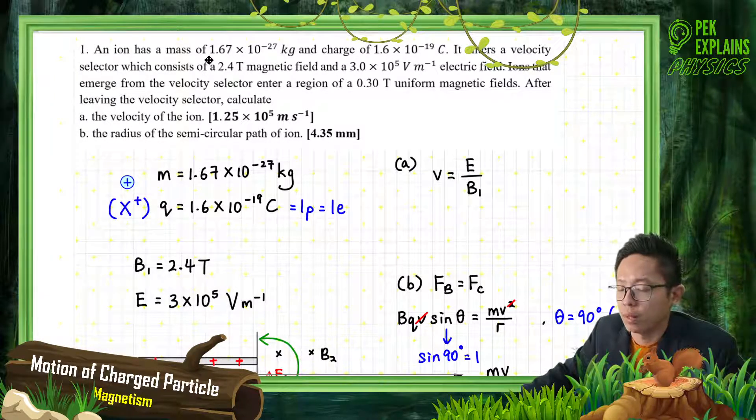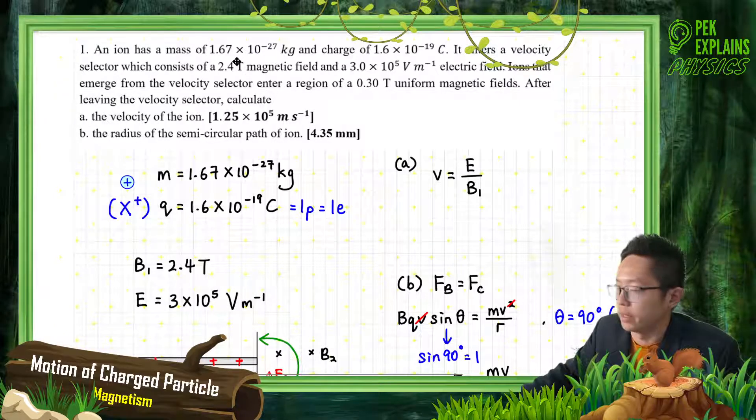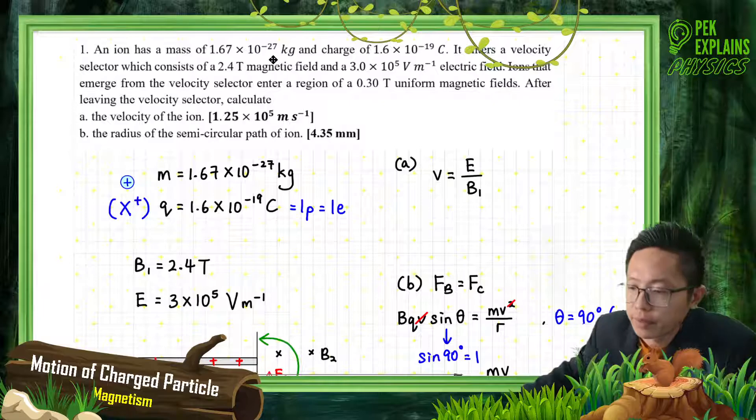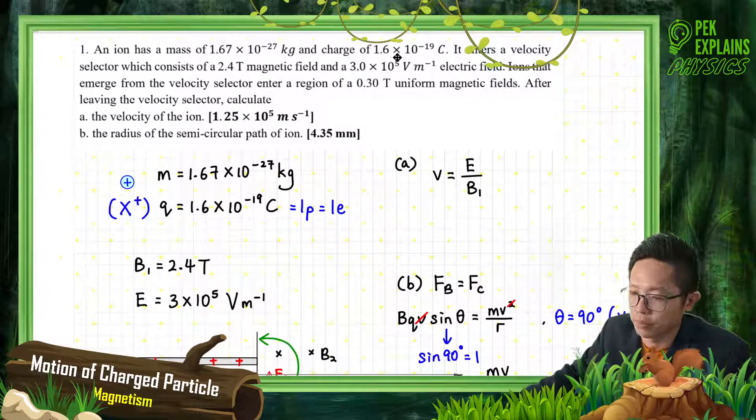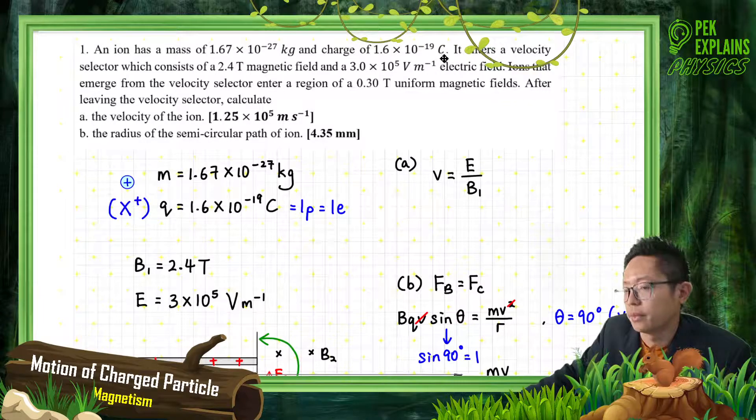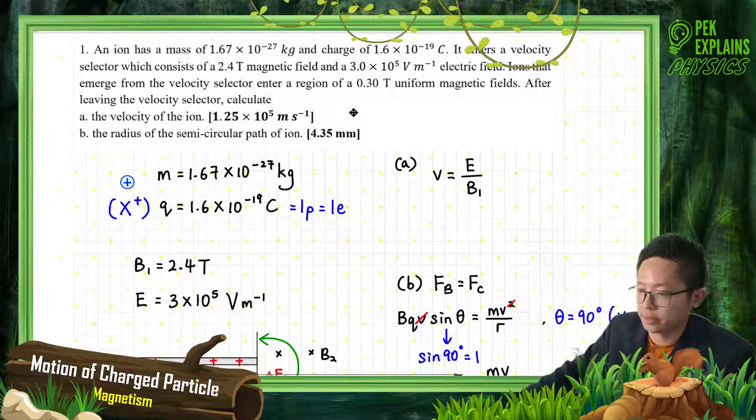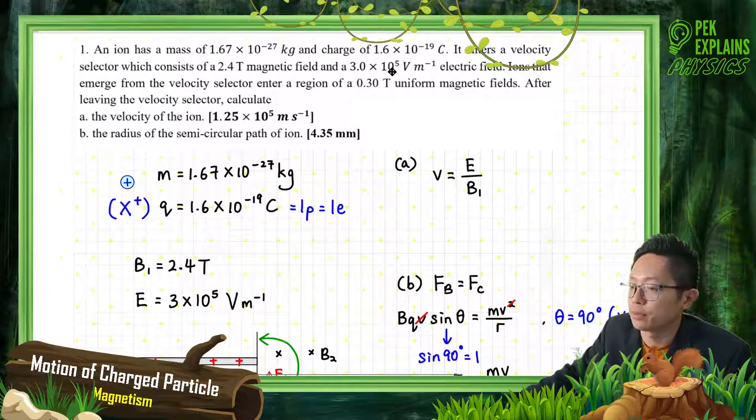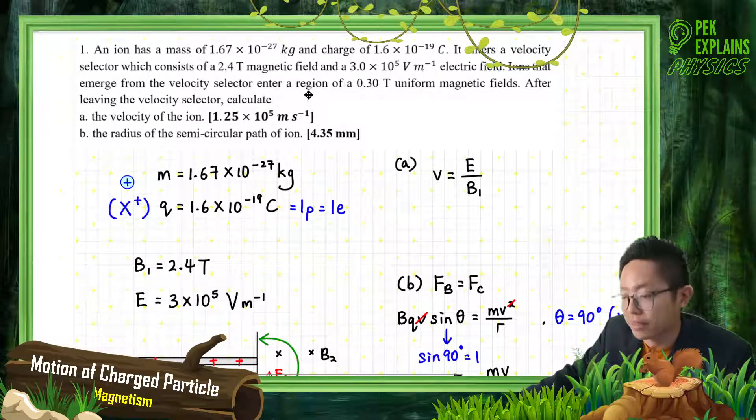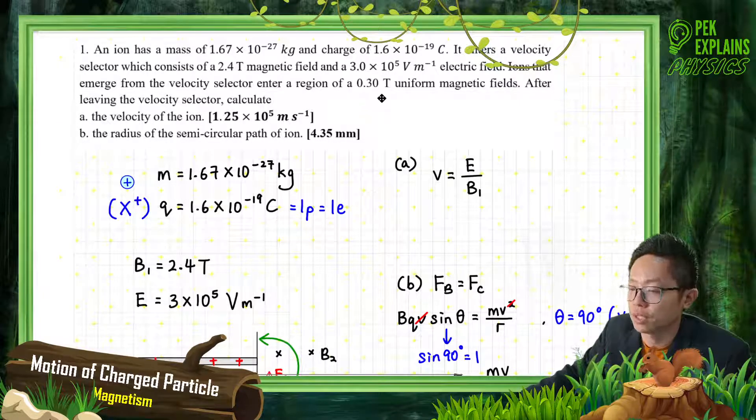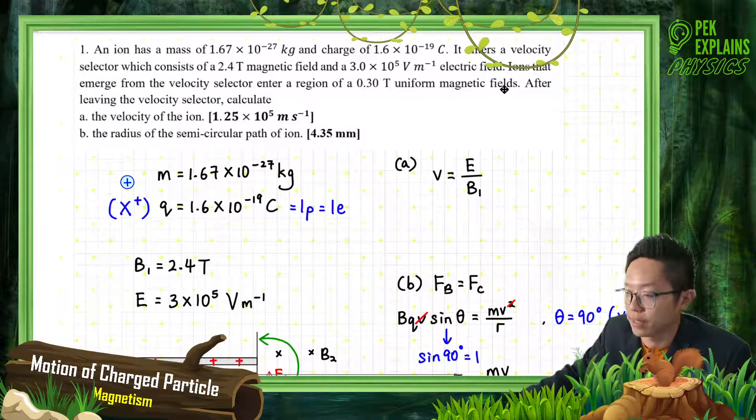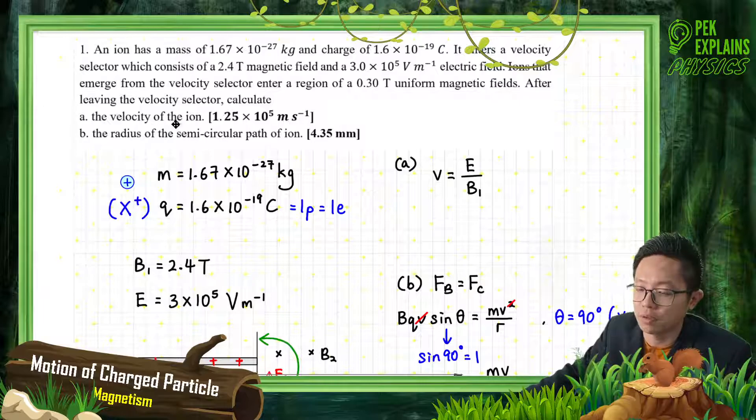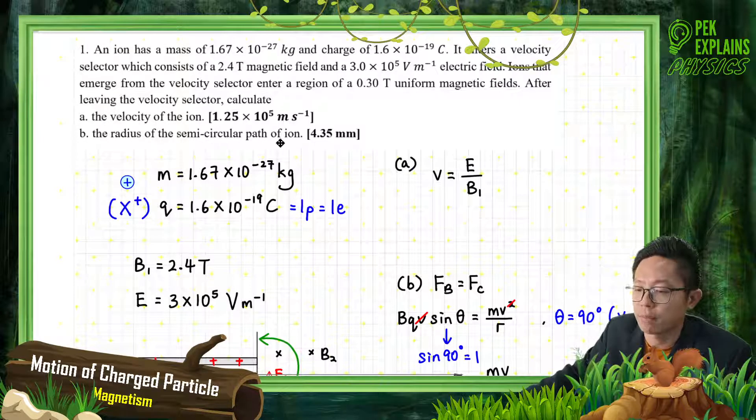An ion has a mass of 1.67×10^-27 kilogram and charge of 1.6×10^-19 coulomb. It enters a velocity selector which consists of a 2.4 tesla magnetic field and 3×10^5 volt per meter electric field. Ions that emerge from the velocity selector enter another region of 0.30 tesla uniform magnetic field. After leaving the velocity selector, calculate velocity of the ion and radius of the semicircular path of ion.